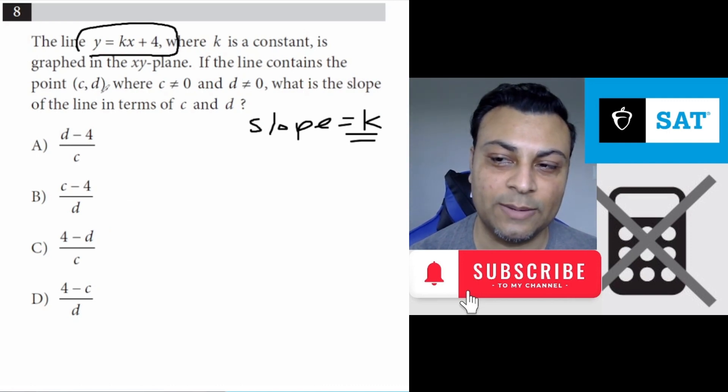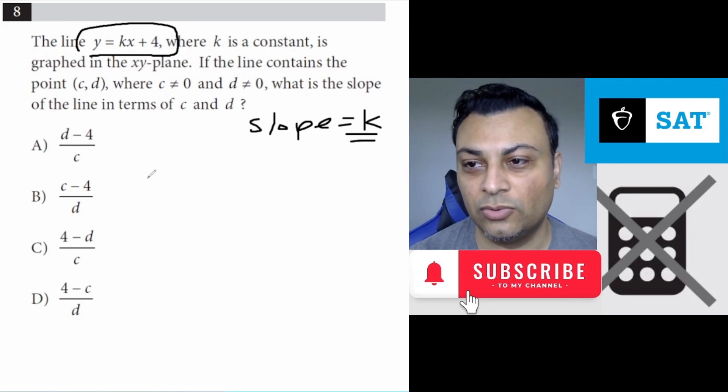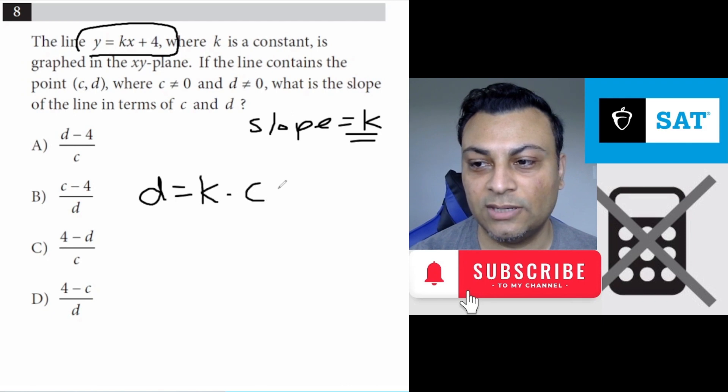And we have to express k in terms of c and d. We note that (c, d) is a solution, or it's on the line. So d being the y-coordinate, d equals k times c plus 4.